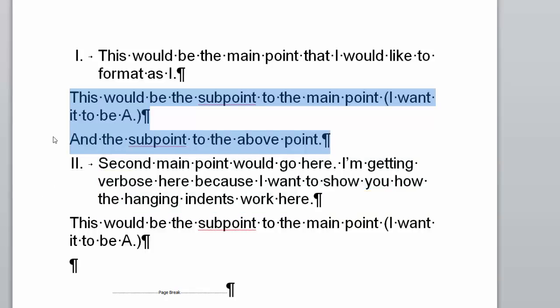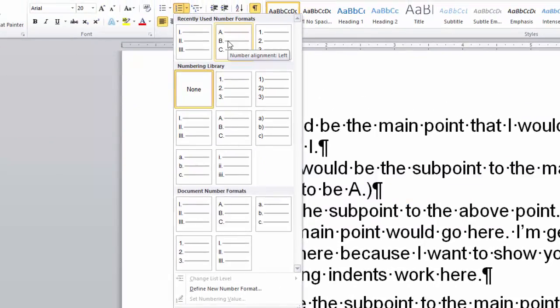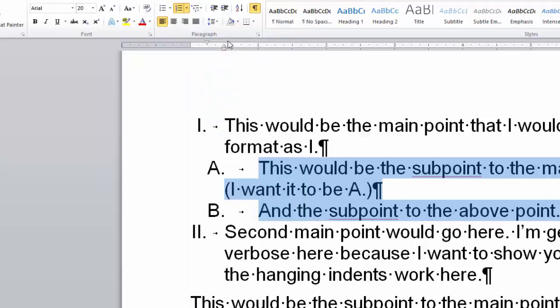I want these to be in A and B. So if I come up here to the numbered list again and I choose A and B, number alignment left, then I've got it set up as A and B.